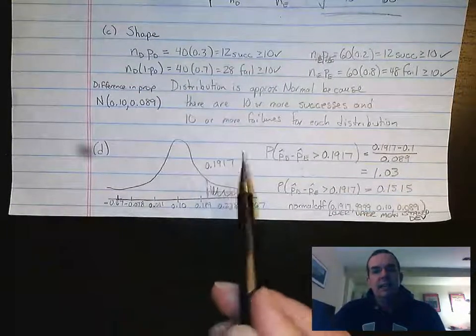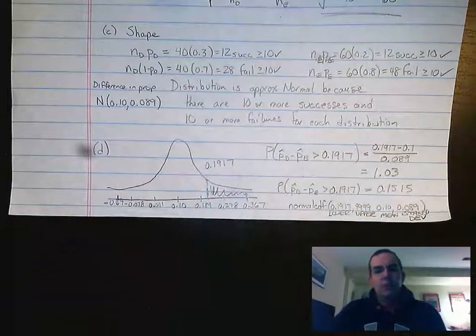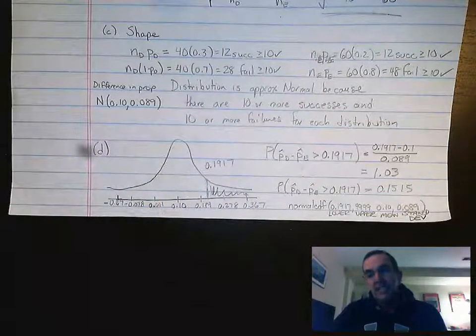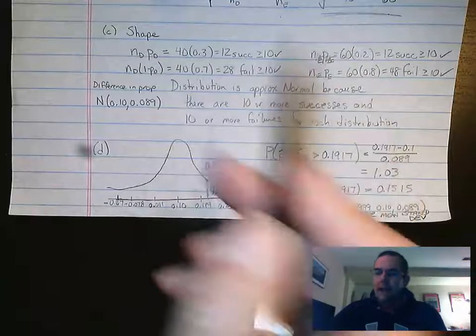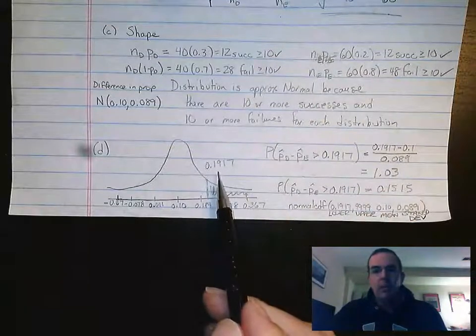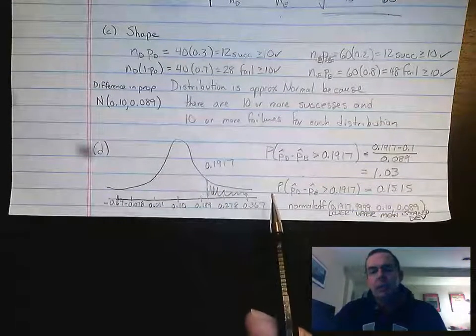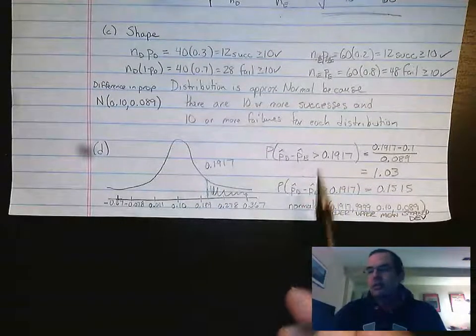According to the question, it asked what is the probability that I would get a result of what we did or more extreme? Going back to part A, 0.1917, I add that to the curve where it needs to be. I shade to the right because that would be where my more extreme is.